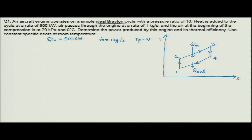Air is entering at the compressor and the pressure is 70 kPa. So P_1 is 70 kPa and T_1 is 0 degree centigrade or 273 Kelvin — that is the inlet condition of the compressor. We need to determine the power produced by this engine and its thermal efficiency. The net power output will be Q_in minus Q_out. We will also calculate the thermal efficiency. We have to use constant specific heats at room temperature.